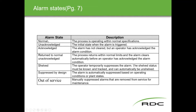Different alarm states include: normal, unacknowledged, acknowledged, return to normal unacknowledged, shelved, suppressed by design, and out of service. 'Return to normal unacknowledged' means the process went into an alarm state — say a high level — but then came back down and cleared itself. 'Shelved' means the operator temporarily suppresses the alarm, which is somewhat dangerous and must be documented. 'Suppressed by design' and 'out of service' are relatively self-explanatory.